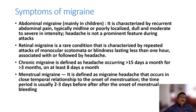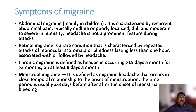Abdominal migraine presents with abdominal pain and tenderness. Retinal migraine presents with focal scotomas or visual loss. Chronic migraine is defined as headache occurring more than 15 days per month for more than three months, with at least eight of those days being migraine days.